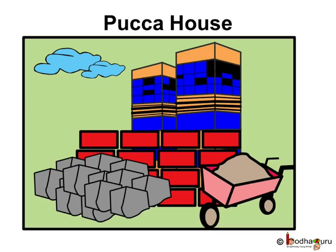So, what are the materials used for building houses? Normally, houses are built using bricks, stone, cement and steel. The windows and doors are generally made of wood. This type of house is very strong and is called a pakka house.